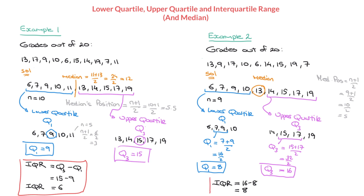We've now found the lower and upper quartiles as well as the interquartile range for this second list of values. We now know how to find the lower quartile, upper quartile, and interquartile range from a list of discrete data — both when the list has an even number of values and when it has an odd number of values. That's it for this tutorial.